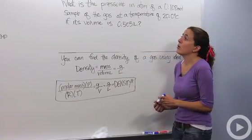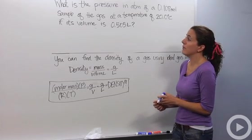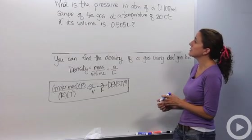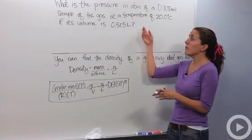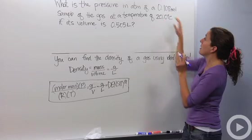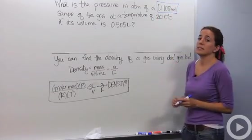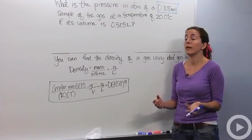All right, so our problem is, what is the pressure in atmospheres of a 0.108 mole sample of helium gas at a temperature of 20 degrees Celsius if its volume is 0.505 liters? I know right away this is an ideal gas law problem. How do I know that? Well, my problem had number of moles in it.